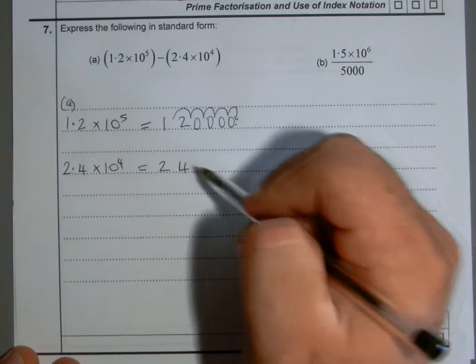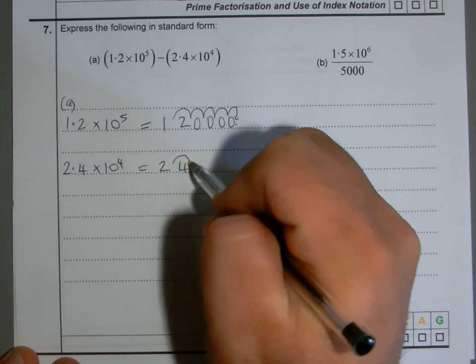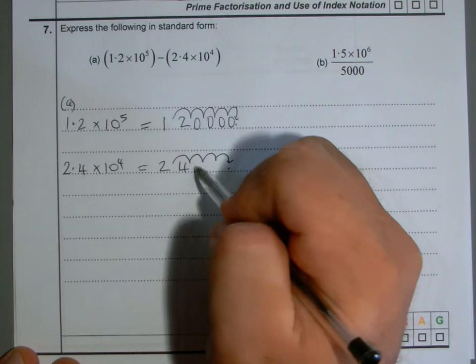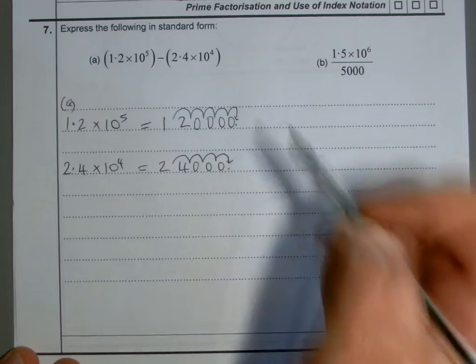The decimal point this time moves four places: one, two, three, four. It'll go there. Fill those gaps up with zeros, so I've got 24,000.